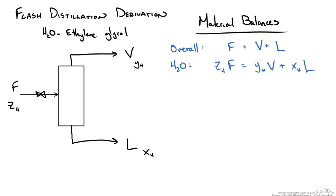The first substitution we make is that the liquid flow rate L equals feed F minus vapor V. This allows us to eliminate one variable by plugging this expression into our component balance equation.